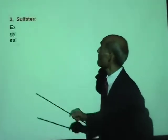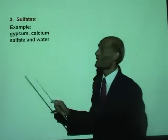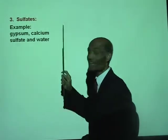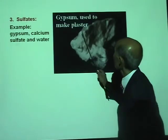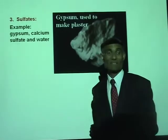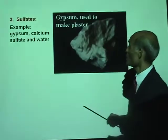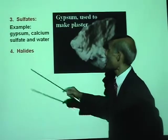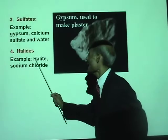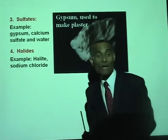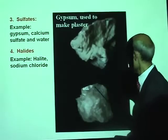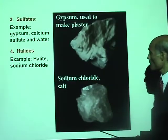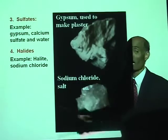Examples of sulfates include gypsum — calcium sulfate — used to make plaster. It's a non-silicate. Halides: an example is sodium chloride, the salt we use at home. It's a non-silicate. There you have sodium chloride, which is a halide.